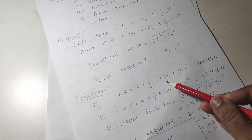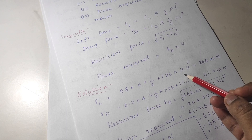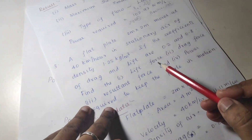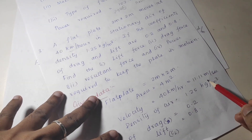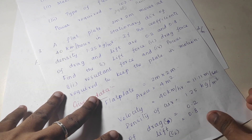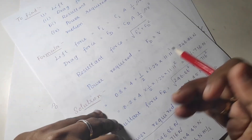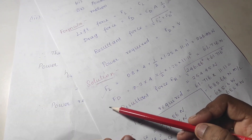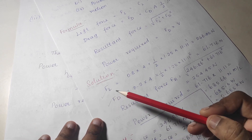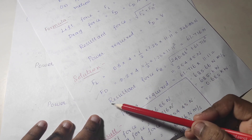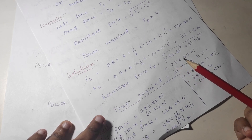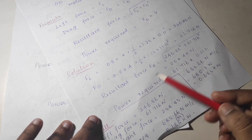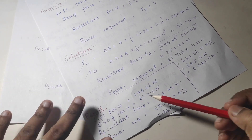The velocity is given in kilometers per hour, so convert it to meters per second. Substitute all values to find the lift force and drag force. With those two forces, find the resultant force, and from that find the power required. Finally, write down all the results.